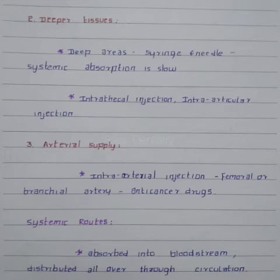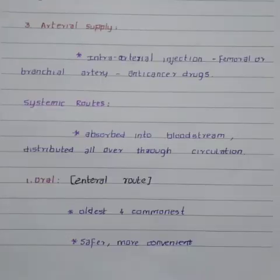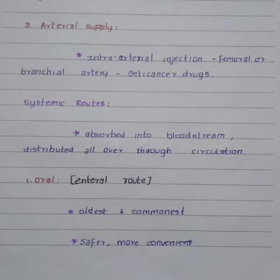The drug is given through two types of injection: intra-articular injection and arterial supply injection. Arterial supply is done by intra-arterial injection into the arteries; for example, the femoral or brachial artery is used for administering anti-cancer drugs.